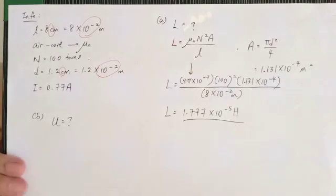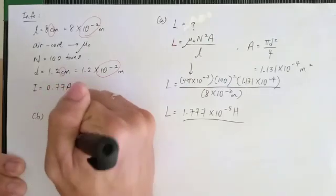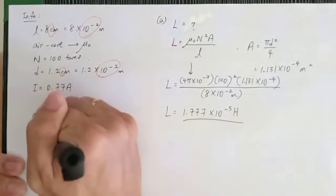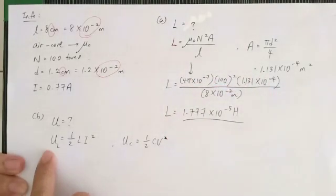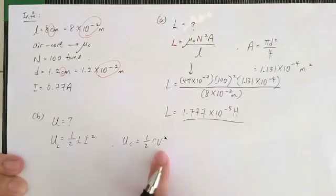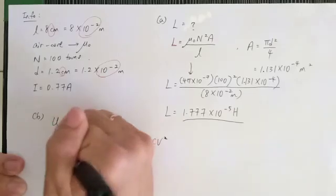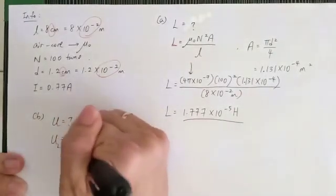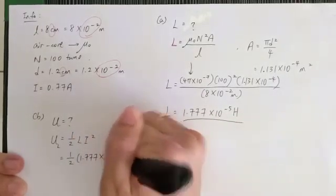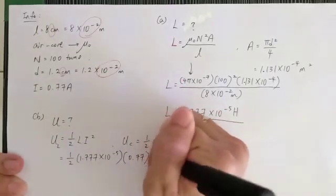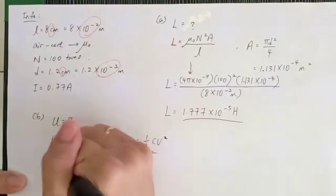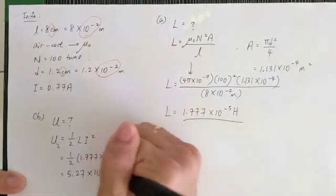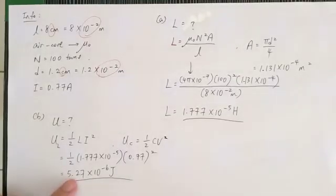Now, to find the energy stored in the inductor, the formula is U equals half L I squared. This is similar to energy stored in a capacitor, which is half C V squared — both have the same form. We already have L, so just substitute: L is 1.777 times 10 to the negative 5 and current is 0.77 ampere, then squared. Finally, the answer is 5.27 times 10 to the negative 6 Joules. That's the energy stored in the inductor.